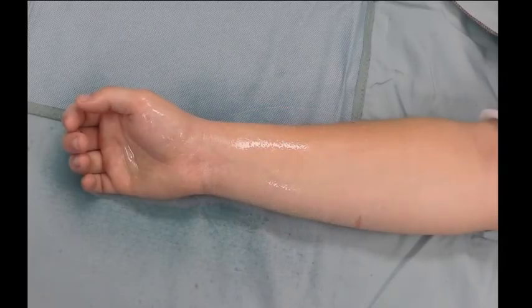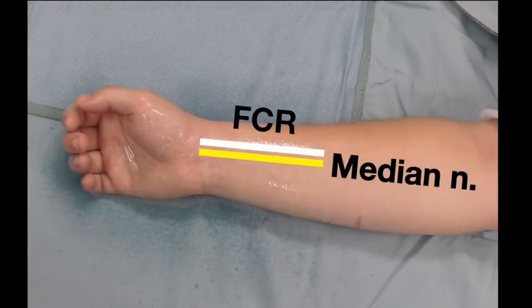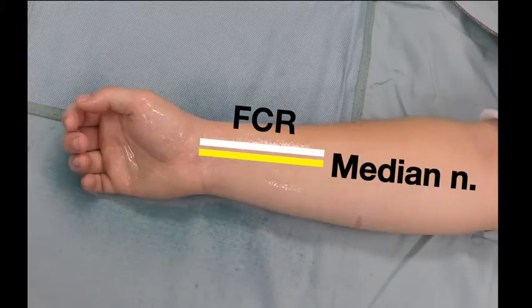The surface anatomy landmarks for the median nerve are the flexor carpi radialis and palmaris longus tendons proximal to the wrist crease.